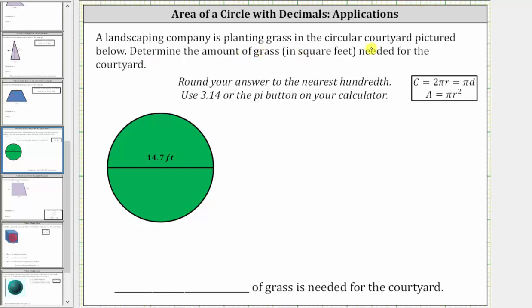A landscaping company is planting grass in the circular courtyard pictured below. Determine the amount of grass in square feet needed for the courtyard.